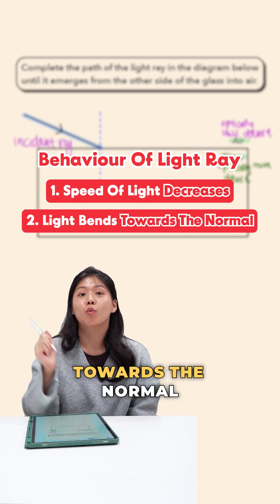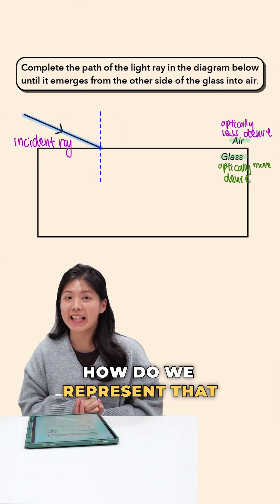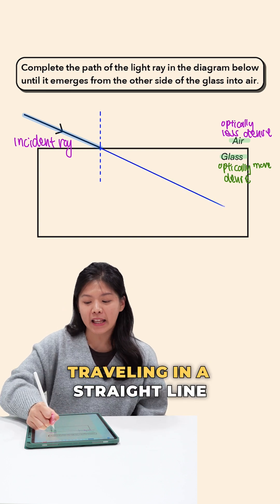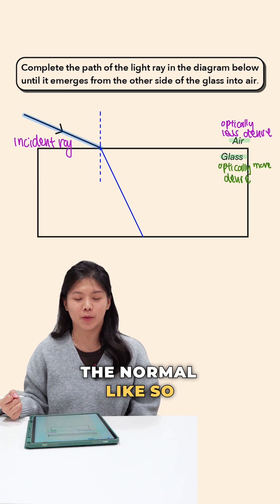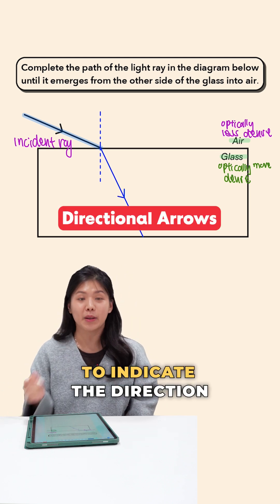And thus, we say that the light ray will bend towards the normal. How do we represent that on the diagram? Instead of my light ray traveling in a straight line like this, we say that it slows down and it bends towards the normal, like so. Don't forget to draw your directional arrows to indicate the direction.